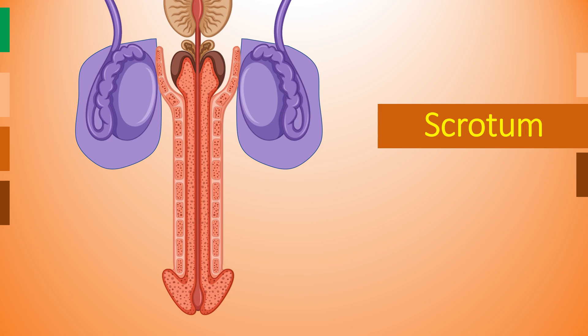The function of the scrotum is to protect the testes and keep them below normal body temperature. That is why the scrotum is located outside the body — a cooler temperature is important for the best production of sperm. It contracts in cold, exercise, or sexual stimulation, and expands and relaxes when warm.